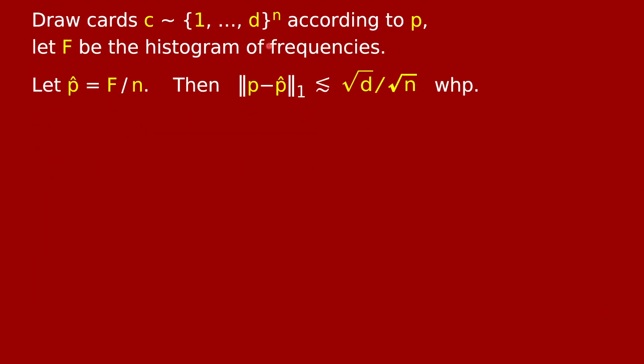If you just draw a random word with probabilities p1 through pd and get a random string of symbols between 1 and d of length n, you let f be the histogram of frequencies, you can try to use this to estimate the vector of probabilities p by letting p hat just be the normalized frequencies f over n. And it's not very hard to show that this is a very good estimator of p. The L1 difference between p and p hat is bounded by a constant times square root d over square root n with high probability. So if you want this error to be small, it suffices for n to be on the order of d to get a very good estimate of all the probabilities.